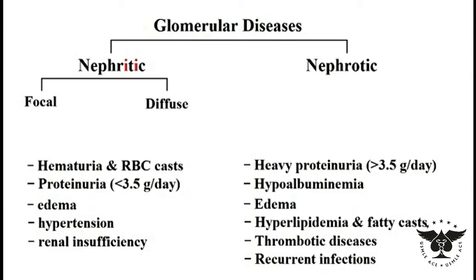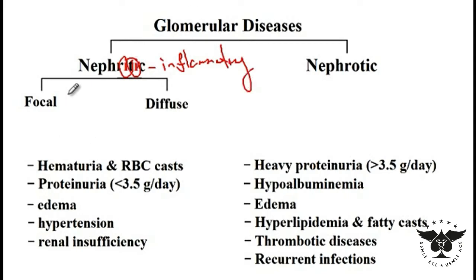In this video I'm going to talk about the glomerular disorders that fall under the nephritic and nephrotic syndromes. The nephritic syndrome — the way I memorize it is that it has two I's in there — so it's associated with inflammatory processes. Those that have the name 'focal' means that less than 50% of the glomeruli are affected.